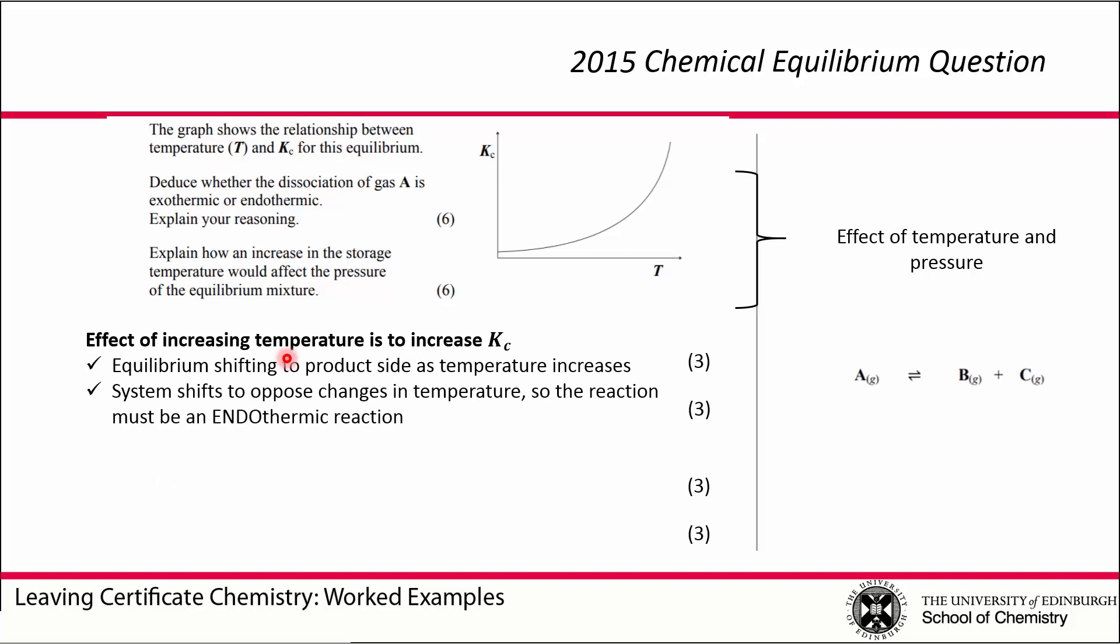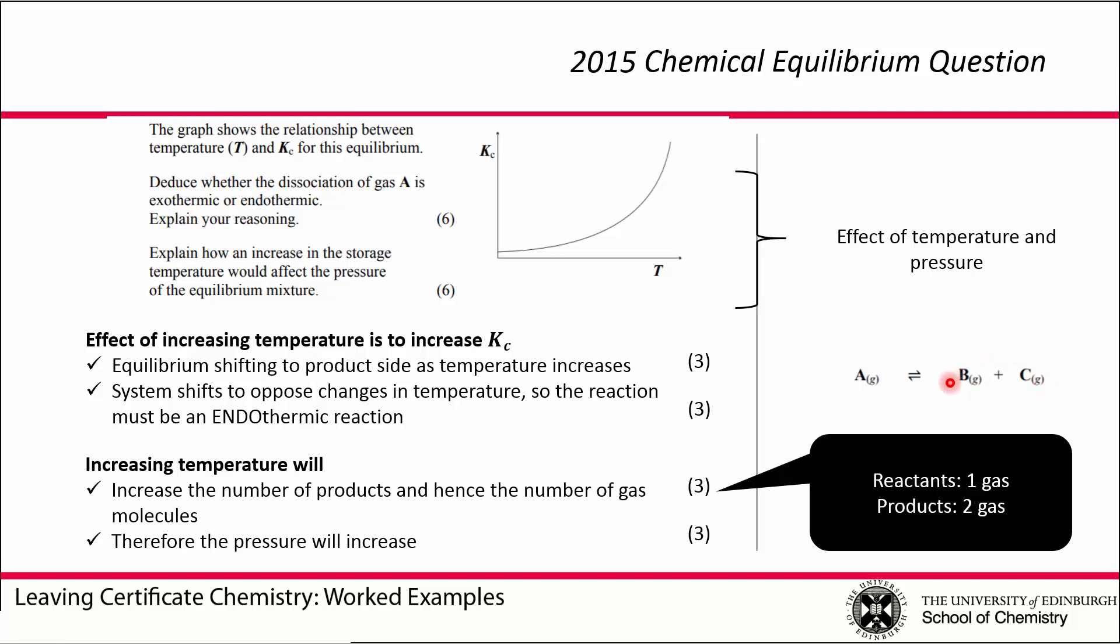When we look at our reaction, we see that there are more gas moles on the product side. Therefore, if we have increased temperature and produce more products, that means we are producing more gas moles. Therefore, the pressure will also increase.